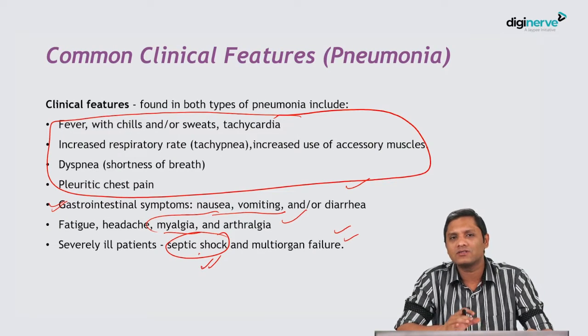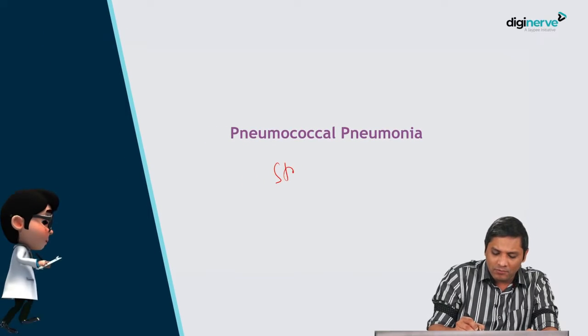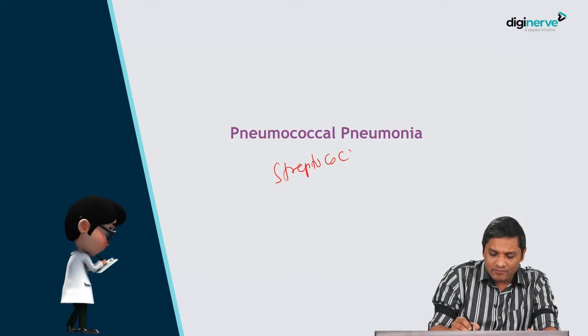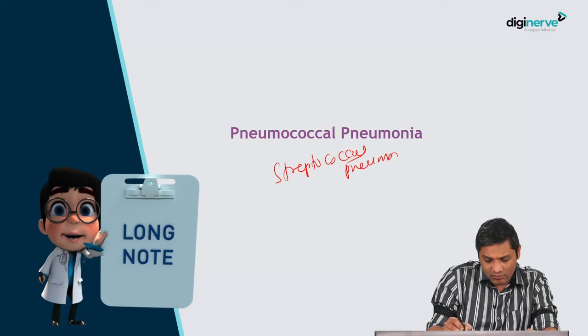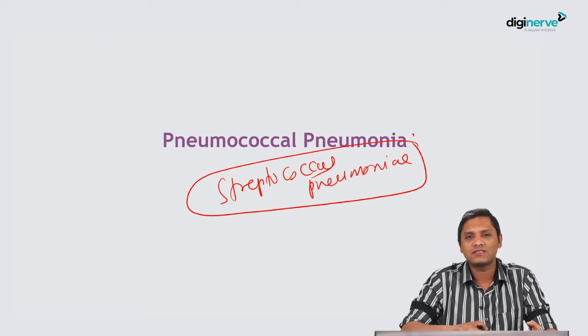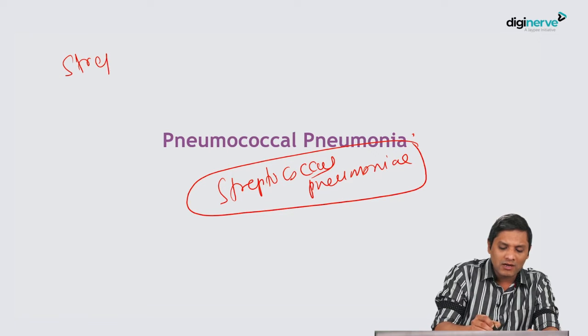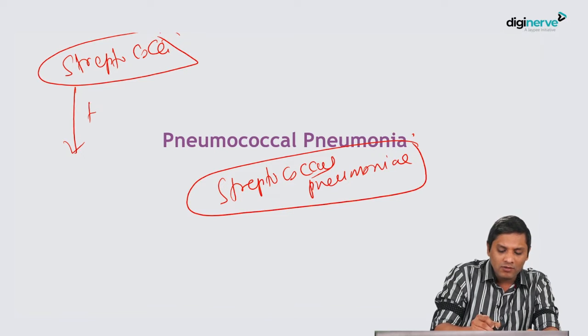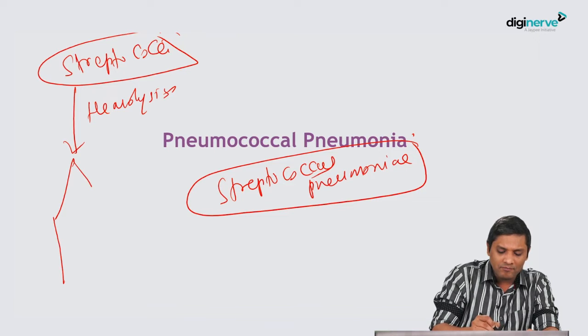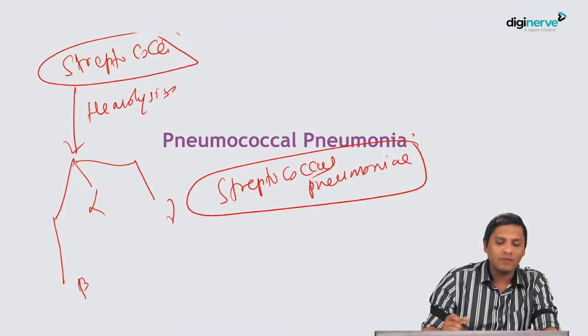With this introduction, let us start with the various etiological agents of bacterial lobar pneumonia, beginning with pneumococcal pneumonia. Pneumococcal pneumonia is caused by the agent Streptococcus pneumoniae. Streptococcus is classified based upon hemolysis on blood agar into three types: alpha, beta, and gamma hemolysis.